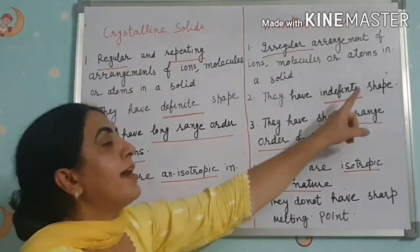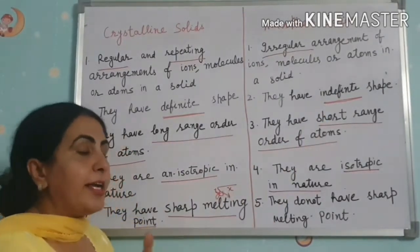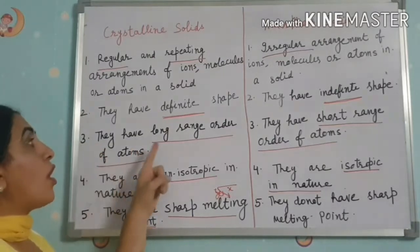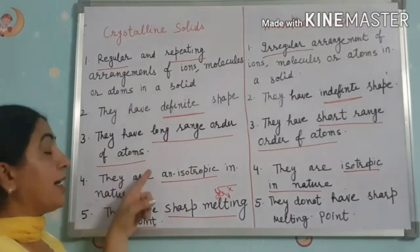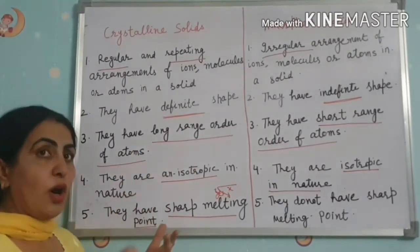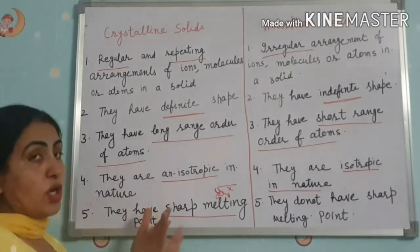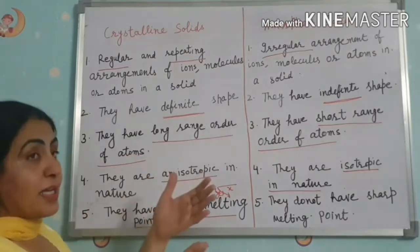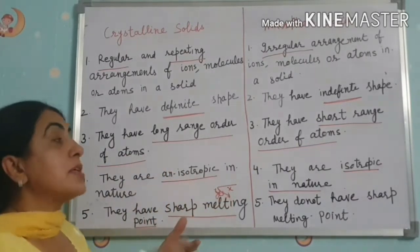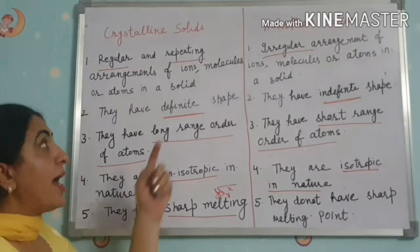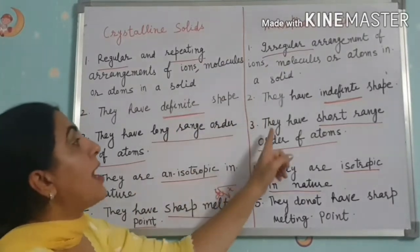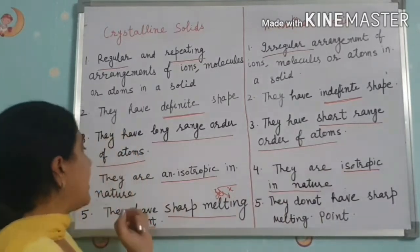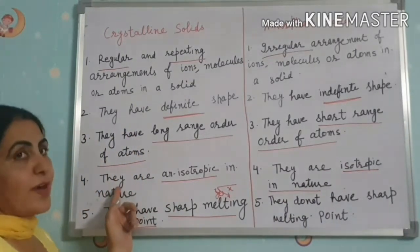The second point: crystalline solids have a definite shape, while amorphous solids have an indefinite shape. Third, crystalline solids have a long range order of atoms — meaning a regular and repeating arrangement of ions, molecules, or atoms over a long range. Amorphous solids have only a short range order of atoms.